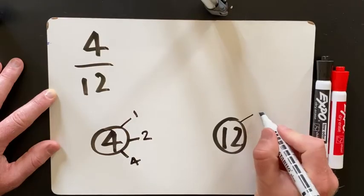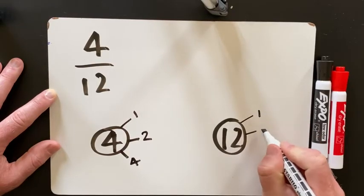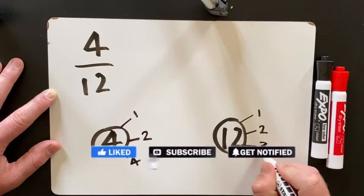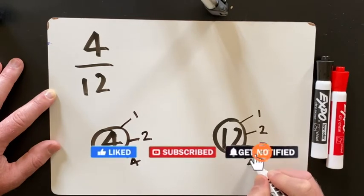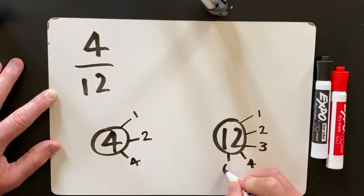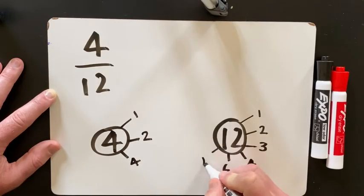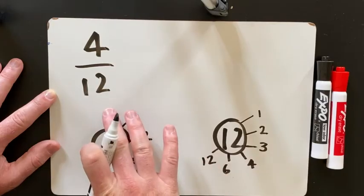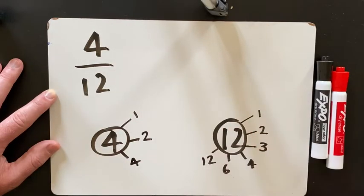Then I go to 12. 12 is in the 1 times table, 12 is in the 2 times table, 12 is in the 3 times table, 12 is in the 4 times table, 12 is in the 6, and the 12 times table. So now I have all the factors for 4, and I have all the factors for 12.